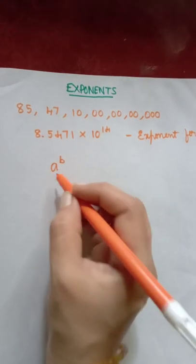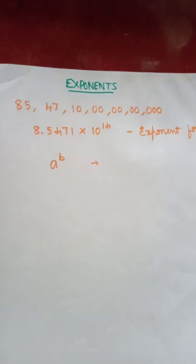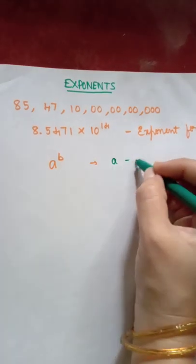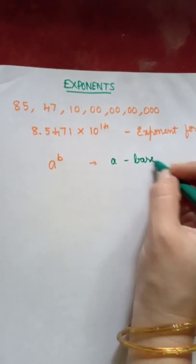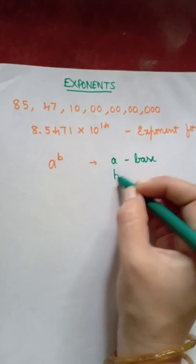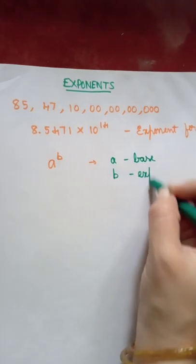Now here a is called as base and b is called as exponent.